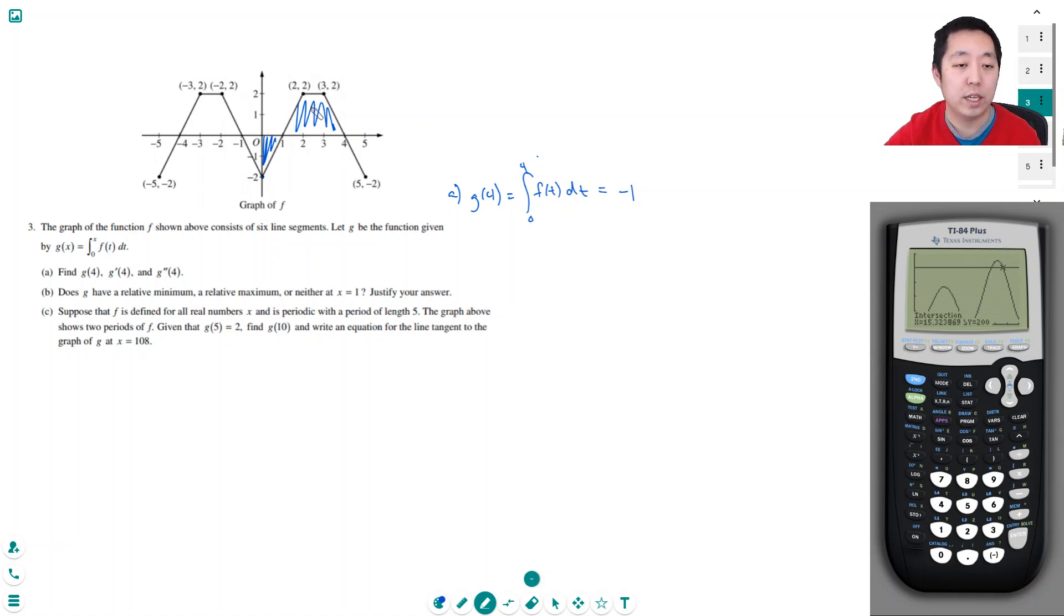You could either break it up into two triangles and a rectangle or do the trapezoid, which is averaging the two bases. This is 3 and this is 1, so that's the sum of the two bases. I'm averaging the bases and then the height is 2, so that's going to equal 8 divided by 2 is 4, 4 minus 1 is 3. So g of 4 is equal to 3.